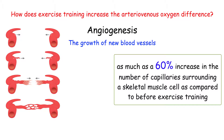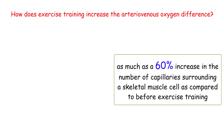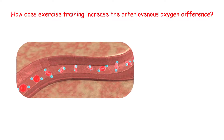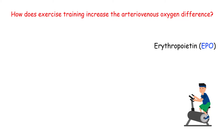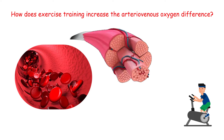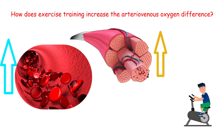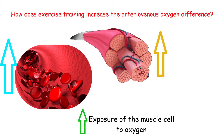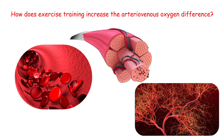One adaptation from aerobic exercise training is that the blood can carry more oxygen than it could before training. Erythropoietin, or EPO, which is often secreted as a result of aerobic exercise, stimulates the bone marrow to increase the production of red blood cells. Increasing the number of red blood cells increases the amount of oxygen the blood can carry. By increasing the number of blood vessels surrounding the muscle cells along with increasing the number of red blood cells, there is an increase in the exposure of the muscle cell to oxygen.